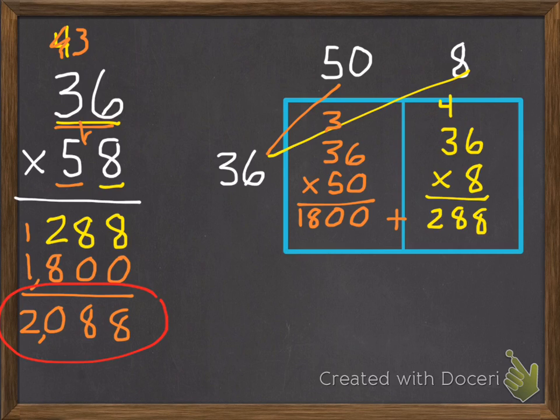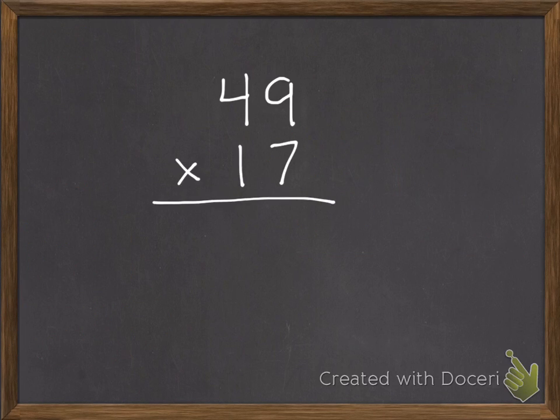So now we need to add these. 8 plus 0 is 8. 8 plus 0 is 8. 2 plus 8 is 10, and 1 plus 1 is 2. So we get 2,088. I'm going to do one more example just standard without the model, and then we'll give you a couple to try.